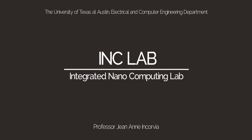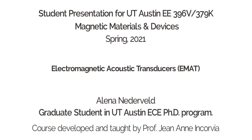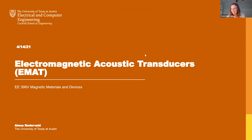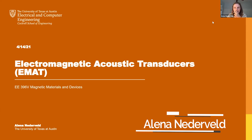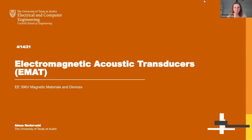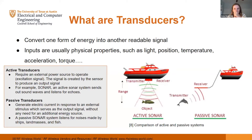My presentation is going to be on electromagnetic acoustic transducers, or EMATs. Starting with the basics: transducers convert one form of energy into another readable signal. Inputs are usually physical properties such as light, position, temperature, acceleration, and torque. There are two different kinds of transducers: active and passive.